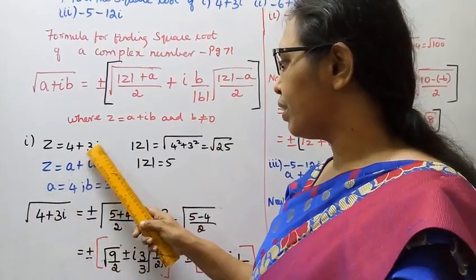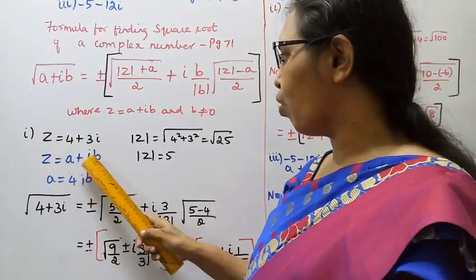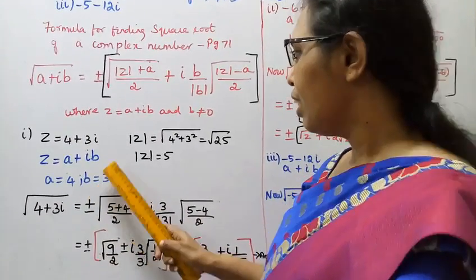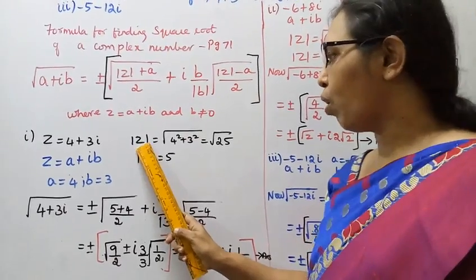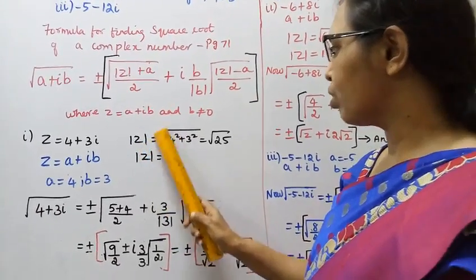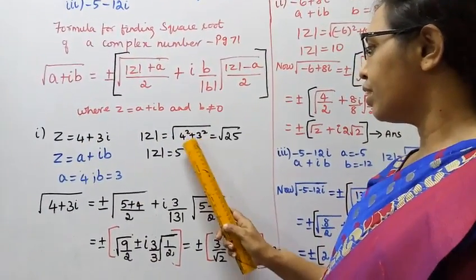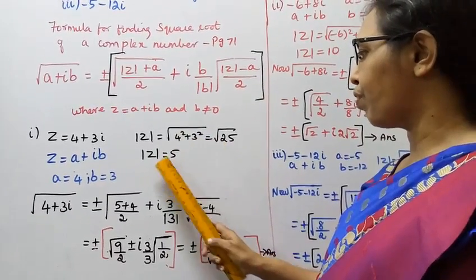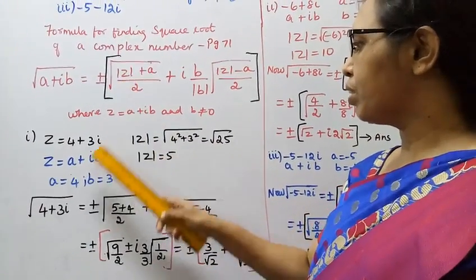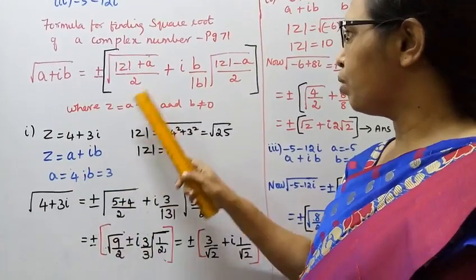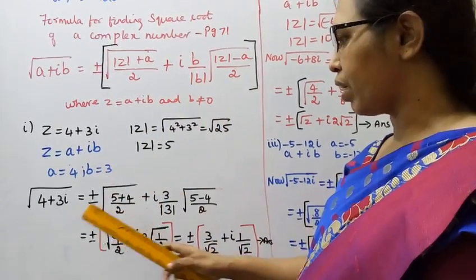First subdivision: z equals 4 plus 3i. So a equals 4, b equals 3. Mod z equals root of (4 squared plus 3 squared), that is root of (16 plus 9), root of 25. Mod z equals 5.